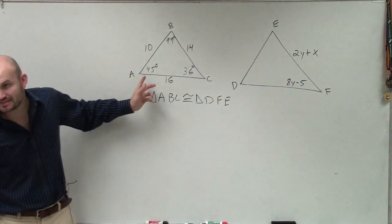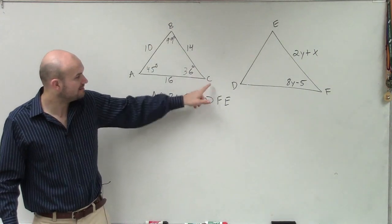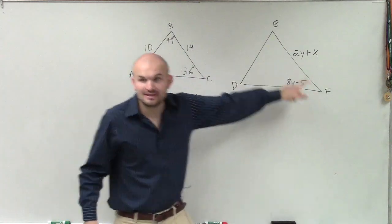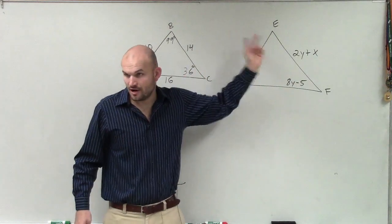This triangle states triangle ABC is congruent to DFE. Notice how they do not go in the same directions, all right?